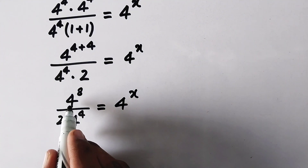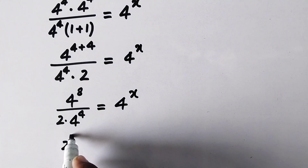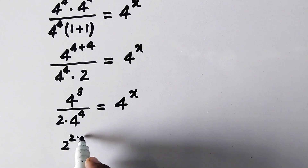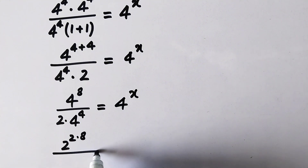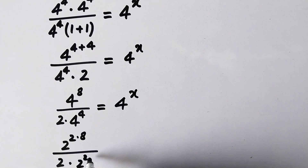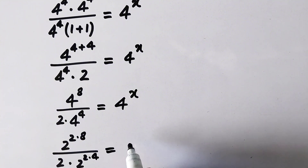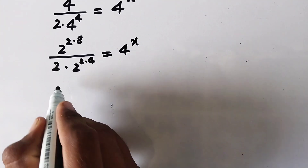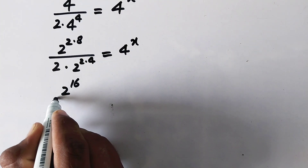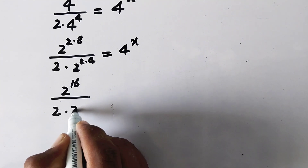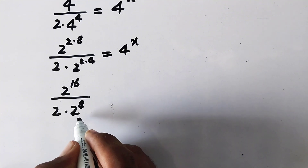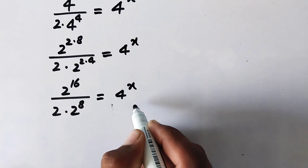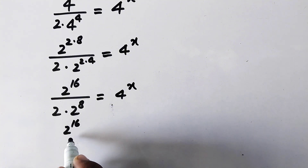Now we write 4 as 2 squared. So 2 squared to the power 8 gives 2 to the power 16, divided by 2 times 2 squared to the power 4, which gives 2 to the power 8, equals 4 to the power x. So we have 2 to the power 16, divided by 2 times 2 to the power 8, equals 4 to the power x.